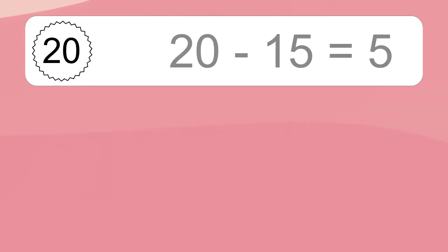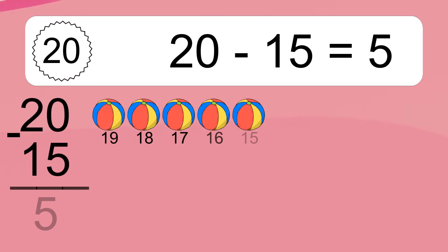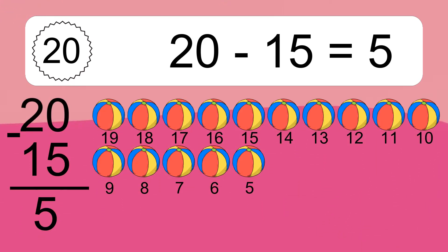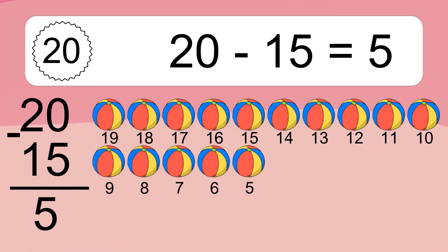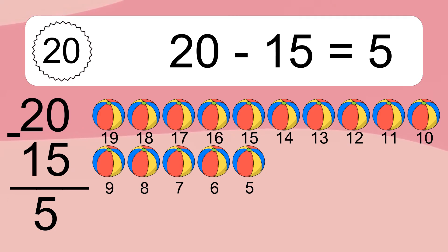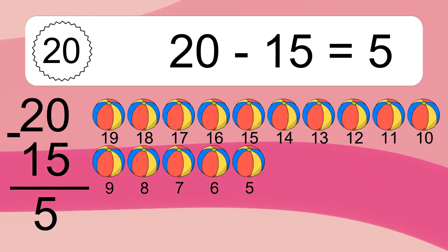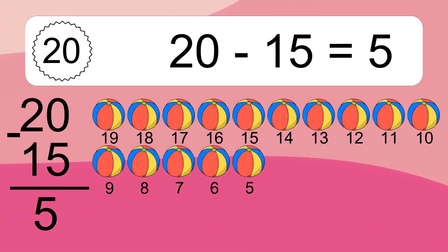20 minus 15 equals what? 20 minus 15 equals 5. Let's count it. 19, 18, 17, 16, 15, 14, 13, 12, 11, 10, 9, 8, 7, 6, 5.